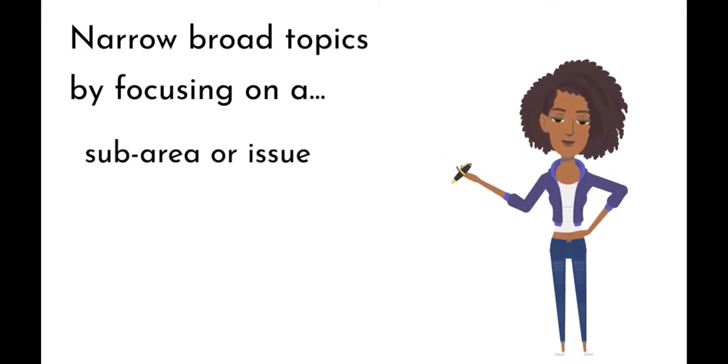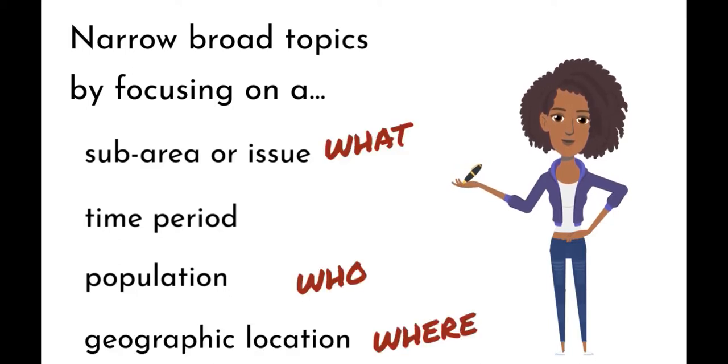Narrow broad topics down by focusing on a sub-area or issue, a time period, a population, or a geographic location. Use the five W's to help you narrow a topic.